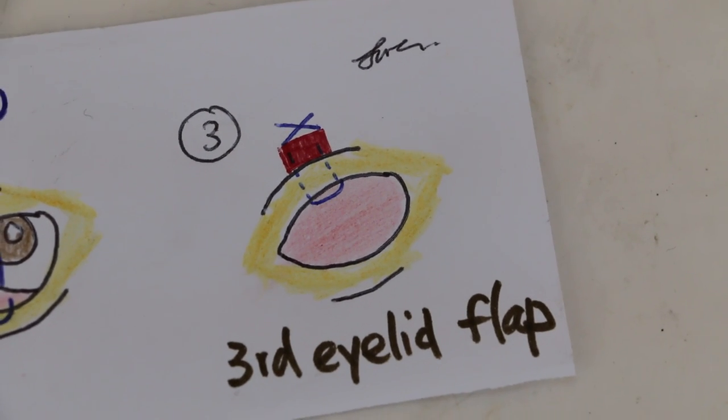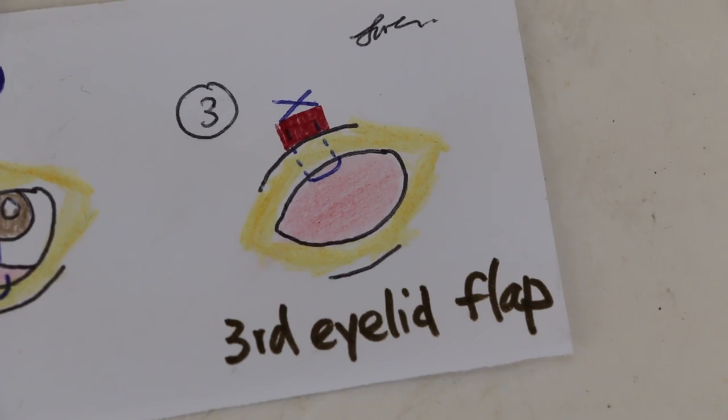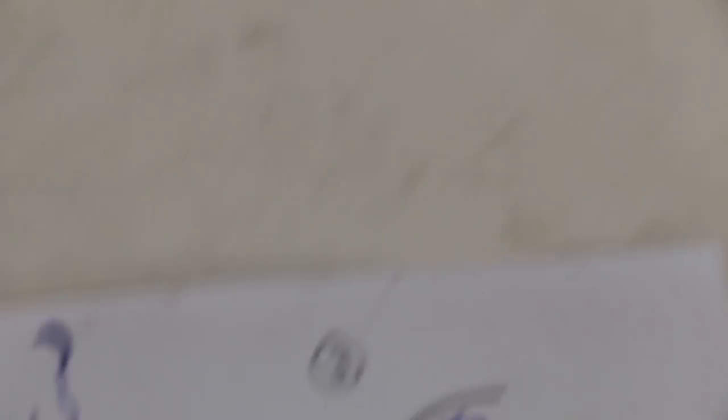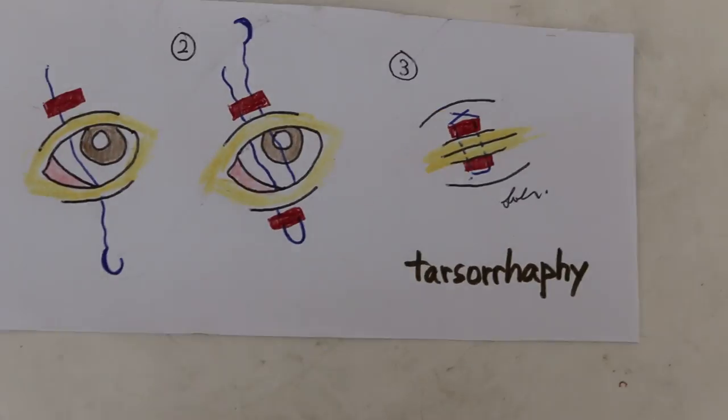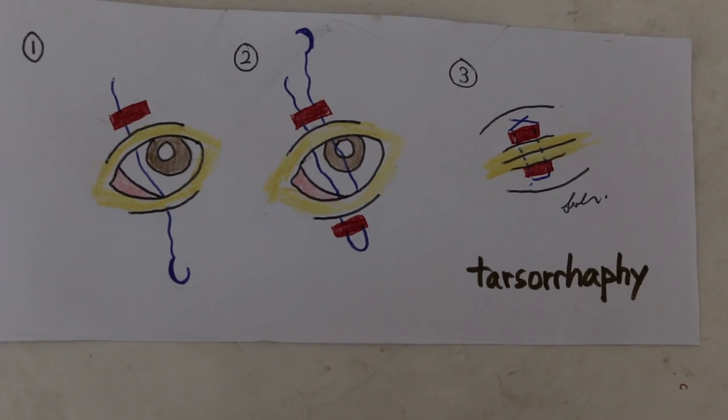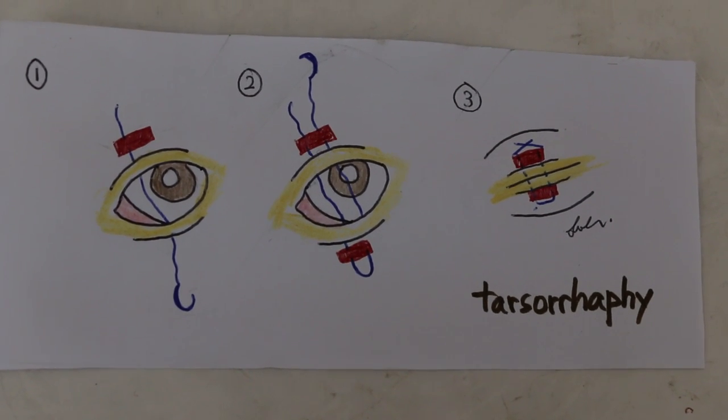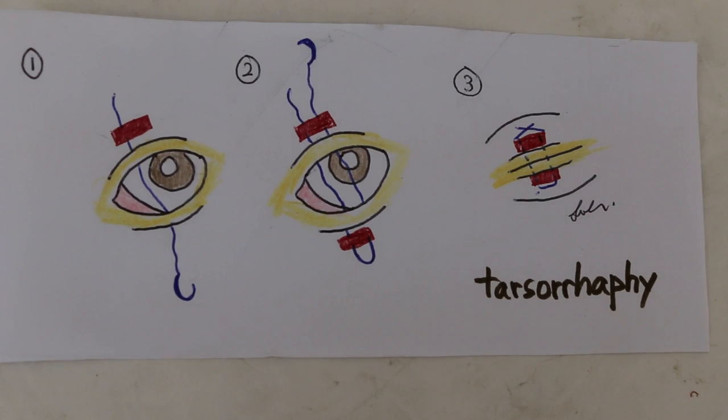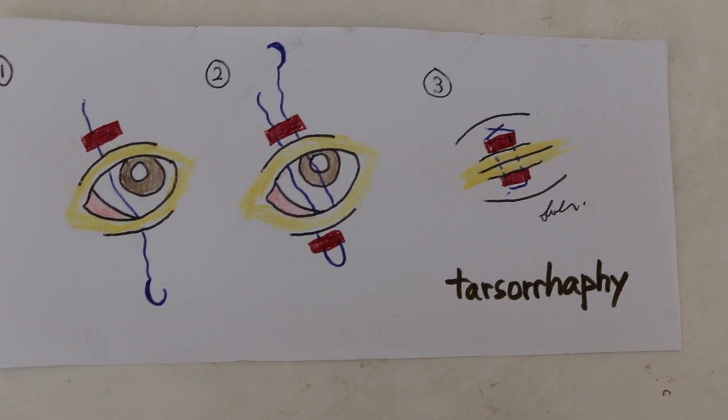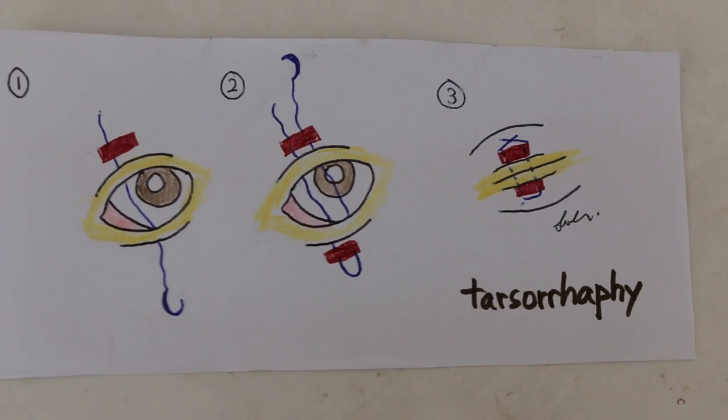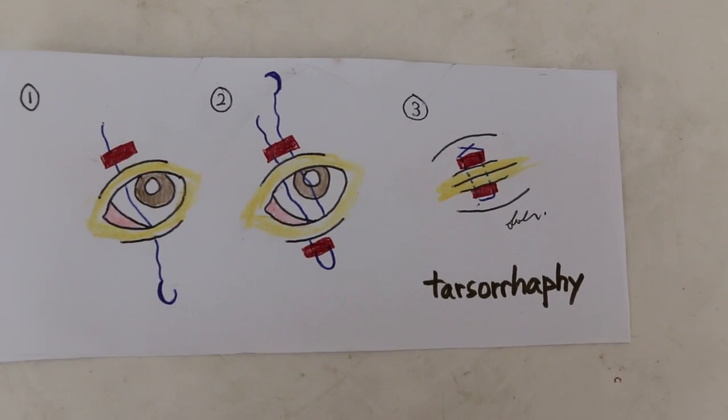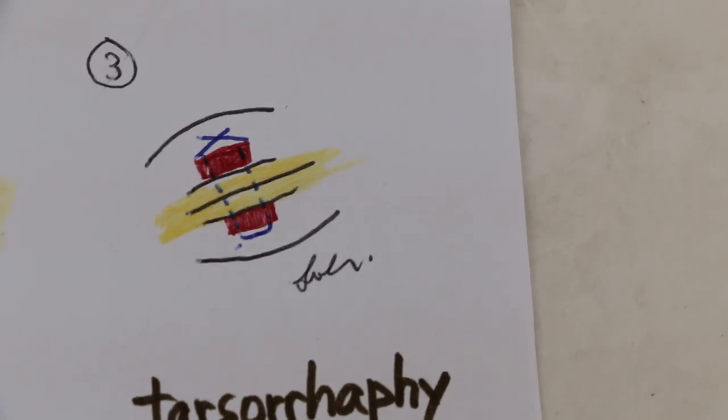This is like a horizontal mattress involving third eyelid. Now the other method is just the upper and lower eyelids, where you just go through the upper eyelid, and then down to the lower eyelid, and come back again like a horizontal mattress, not involving the third eyelid flap. No third eyelid flap.